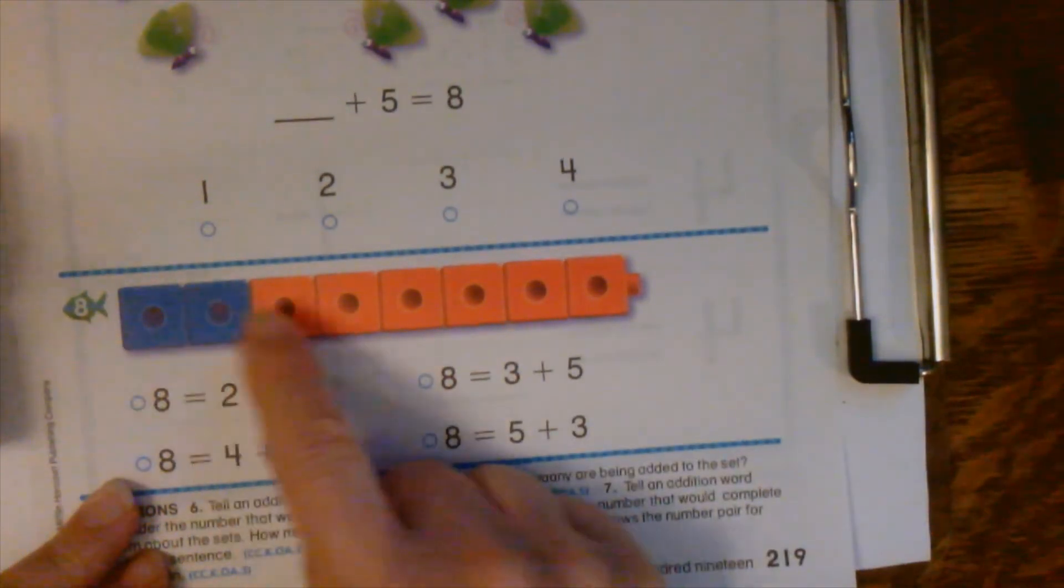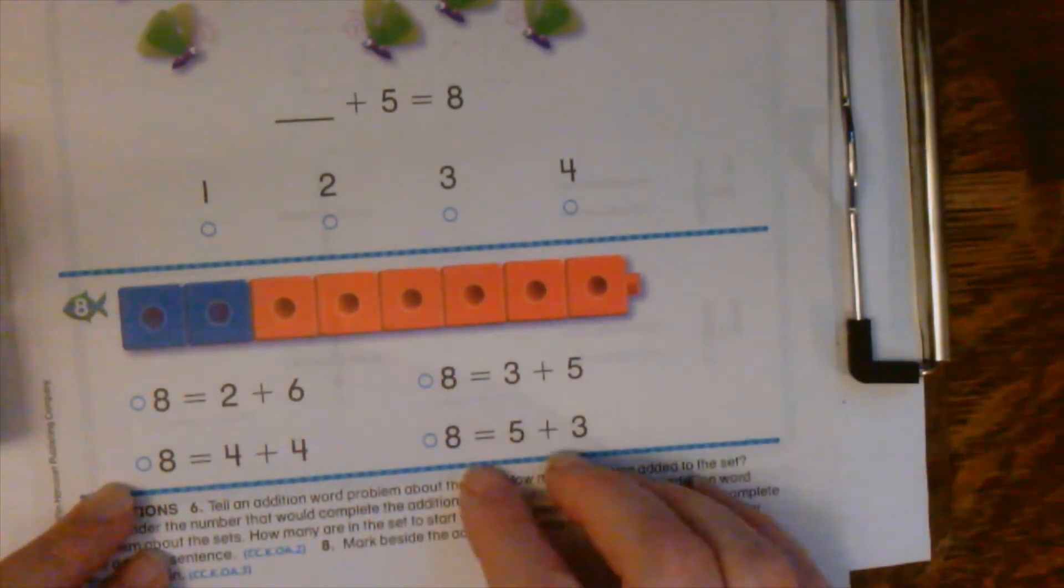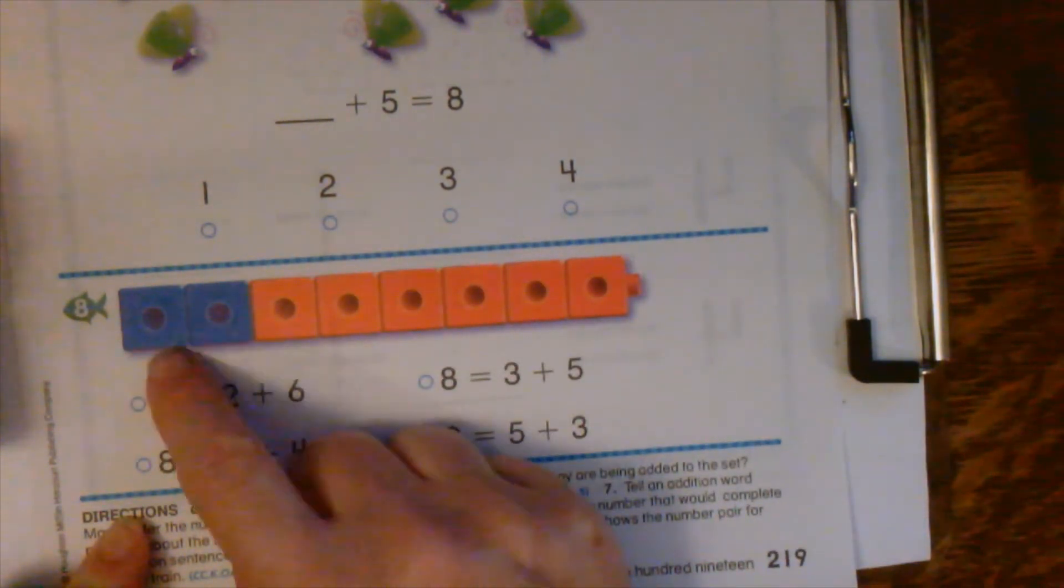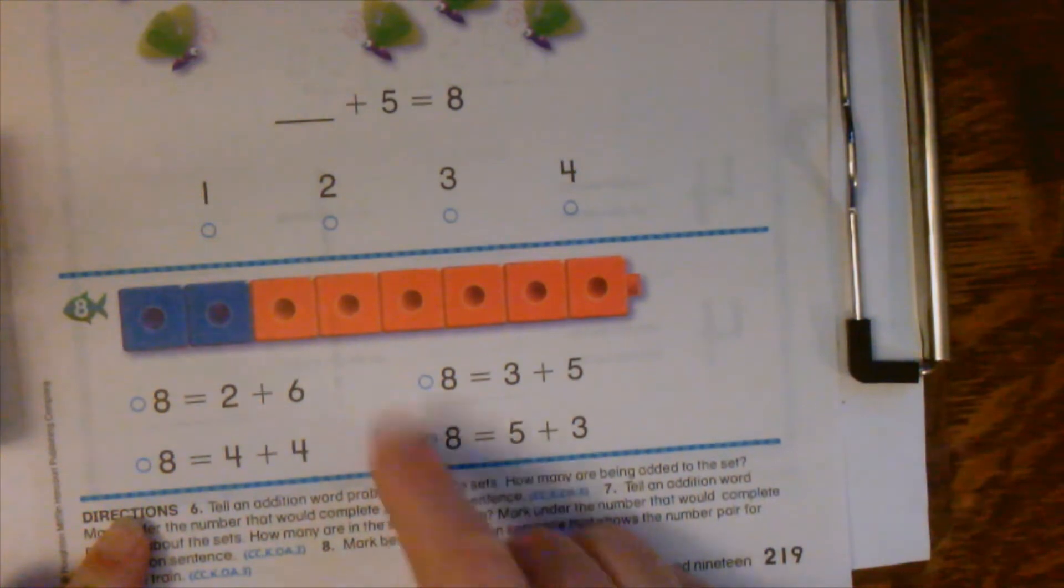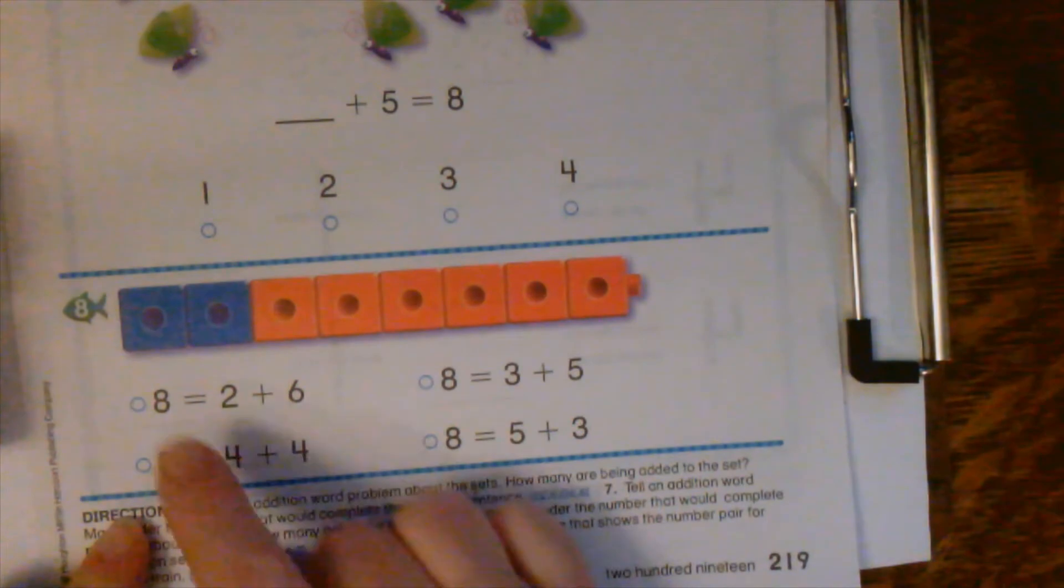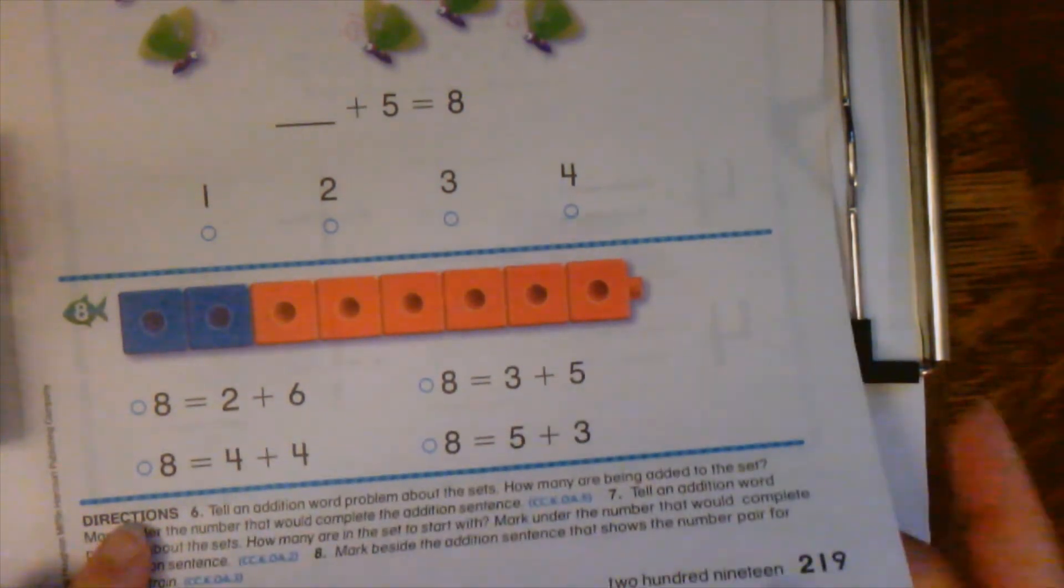Down here take a look at these cubes. Count them if you need to. Obviously altogether there are eight. It's really quick to see how many blue ones are here at the beginning. You can count these red ones if you need to. Which number sentence could go with that train of cubes? Go ahead and color in the circle.